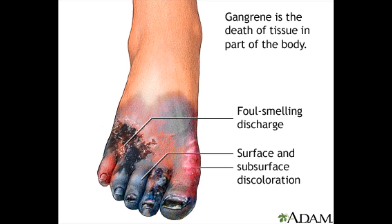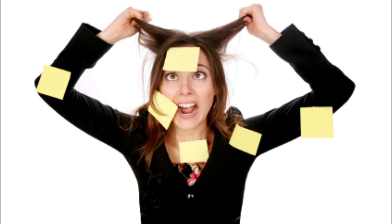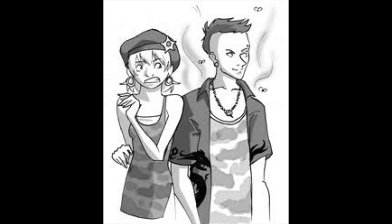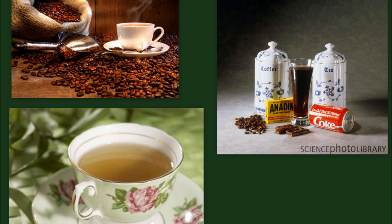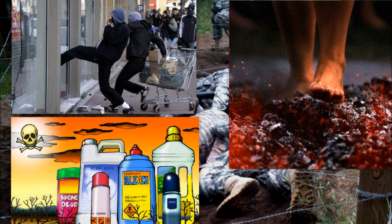A nurse is caring for a client with chronic occlusive arterial disease. What precipitating cause is the nurse most likely to identify for the development of ulceration and gangrenous lesions? Number one: emotional stress. Number two: poor hygiene and limited protein intake. Number three: stimulants such as coffee, tea, or cola drinks.